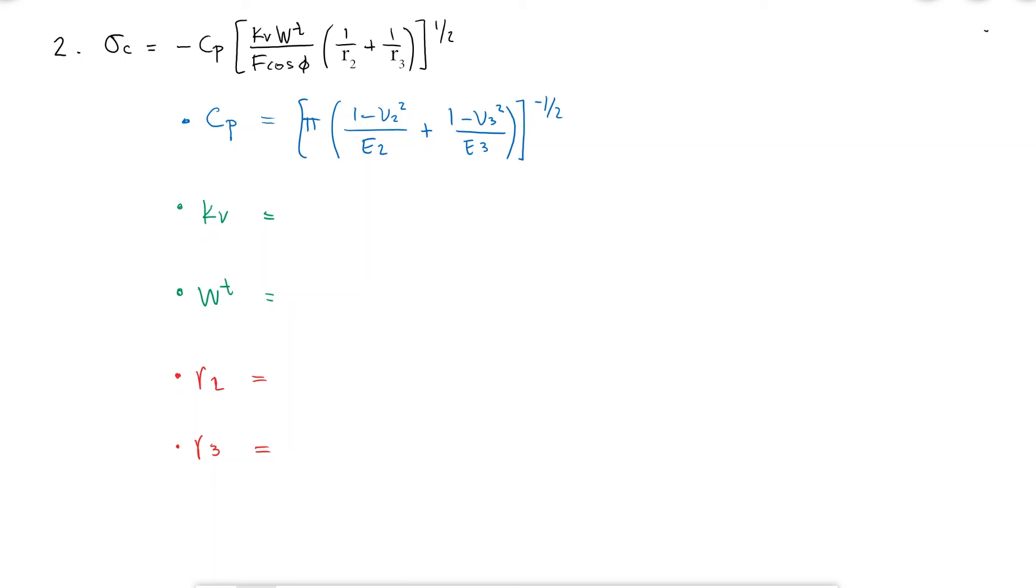We know we can find the elastic coefficient either in tables for common combinations of materials, in this case a 1020 steel pinion on a cast iron gear, or just look up elastic moduli and Poisson's ratio for 1020 steel for the pinion and cast iron for the gear.